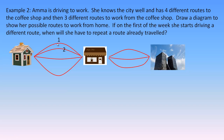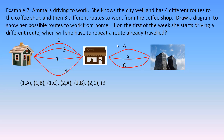We could label the routes from home to the coffee shop as 1, 2, 3, and 4, and the routes from the coffee shop to her workplace as A, B, and C. Here's the organized list: starting with route number 1, after the coffee shop she could drive route A, route B, or route C — giving us 1A, 1B, and 1C. Then route 2 combined with A, B, or C. Then route 3 with A, B, or C. Then route 4 with A, B, or C.